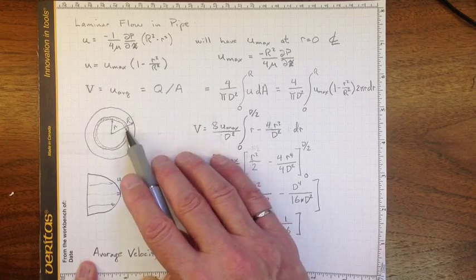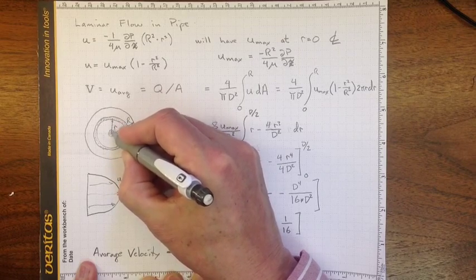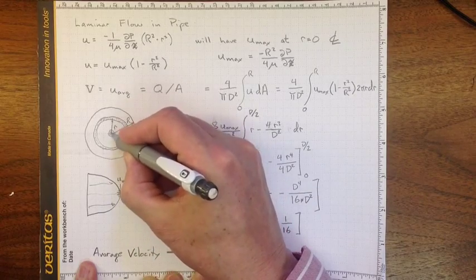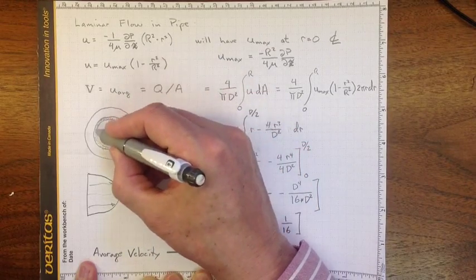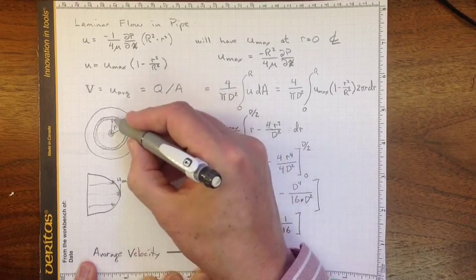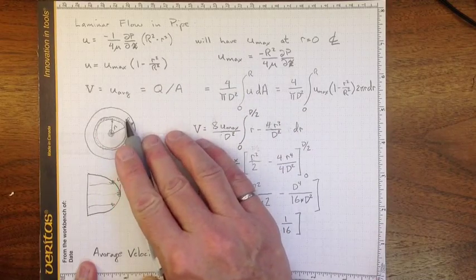And that average has to take into account the fact that although this region in here has a very high velocity, it has a really small area compared to this region out here, which has a lower velocity but occupies a larger area of the pipe. So we have to do our integration a little bit carefully.